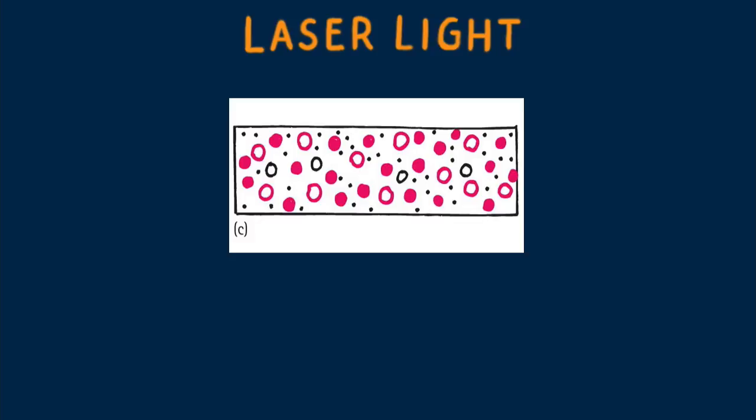The process continues and the population of excited neon atoms soon outnumbers neon atoms in a lower energy excited state. This inverted population is, in effect, waiting to radiate its energy.